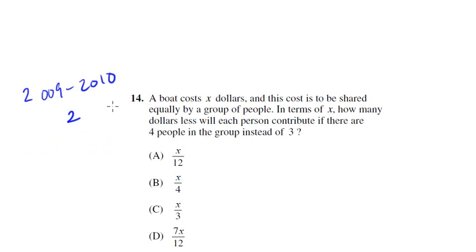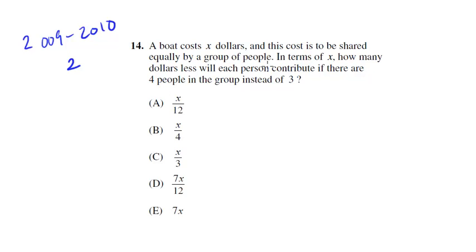A boat costs X dollars and this cost is to be shared equally by a group of people. In terms of X, how many dollars less will each person contribute if there are 4 people in the group instead of 3? Okay, so this one's a 4 out of 5 in difficulty. So it's pretty hard. So we could do some algebra and we will do that in a second. But let's just go ahead and plug in. Again, we see the variables are in the answer choices, so let's just go ahead and go from there. A boat costs X dollars. Well here, we want to kind of look ahead a bit because we want to plug in for X. But if we plug in something like 100, it would work good for 10 divided by 4, but 10 divided by 3 may not work good in terms of the division. So let's pick something that will just work easy with the math.